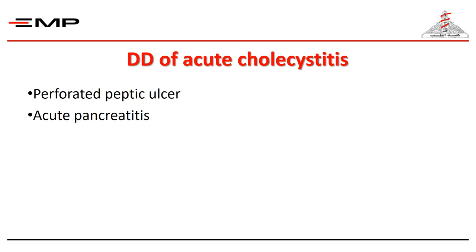Like acute cholecystitis, acute pancreatitis is also a complication of biliary calculi. Therefore, in the presence of gallstones, the acute symptoms must be determined to be related to which complication. Ultrasonography is an adequate radiology modality in diagnosing acute cholecystitis. Serum amylase is elevated initially in both acute cholecystitis and acute pancreatitis; however, it continues to rise to levels exceeding 500 units per liter with pancreatitis, and serum lipase is more specific to pancreatitis. CT or MRI are superior to ultrasonography for diagnosing pancreatitis and are often requested to verify the diagnosis and assess its severity.